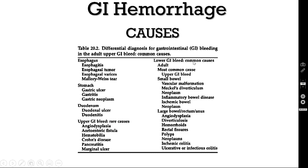The most common cause for lower GI bleed is upper GI bleed. Causes in the small bowel include angiodysplasia, Meckel's diverticulum, non-Hodgkin's lymphoma, Crohn's disease, and mesenteric vascular ischemia. Causes in the large bowel, rectum and anus include angiodysplasia, diverticulosis (both causing massive bleeding), hemorrhoids, fissure-in-ano, polyps, colorectal cancer, ischemic colitis, and inflammatory bowel disease.